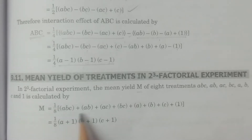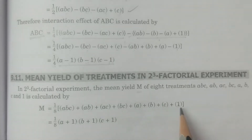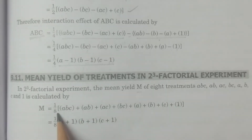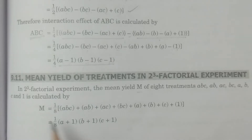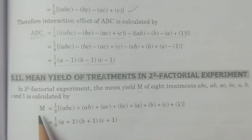Similarly, M = (ABC + AB + AC + BC + A + B + C + 1) divided by 8, which by the formula is (A+1)(B+1)(C+1) × 1/8. I hope you understand the value of mean yield.